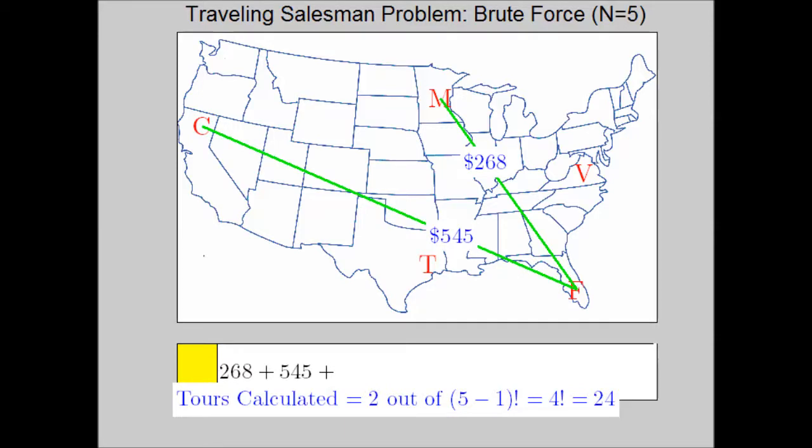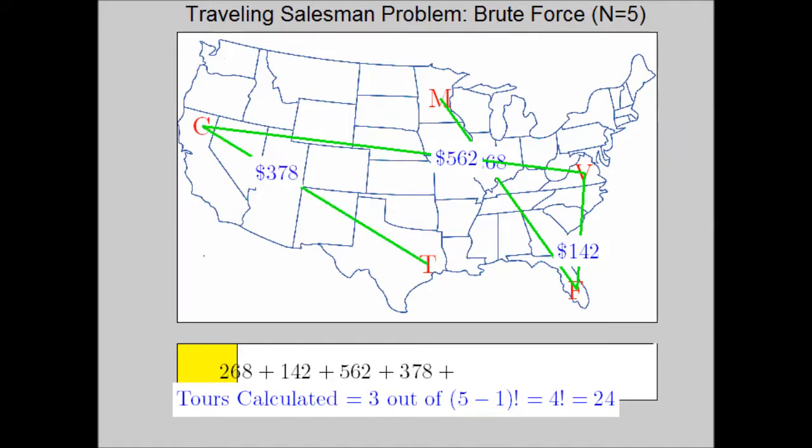In this case, since there's five cities, we can show that there are 5 minus 1 factorial, or 4 factorial, that's equal to 4 times 3 times 2 times 1, or 24 different tours to look at or to consider.